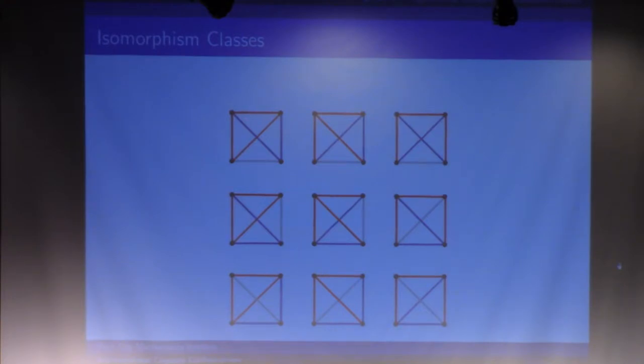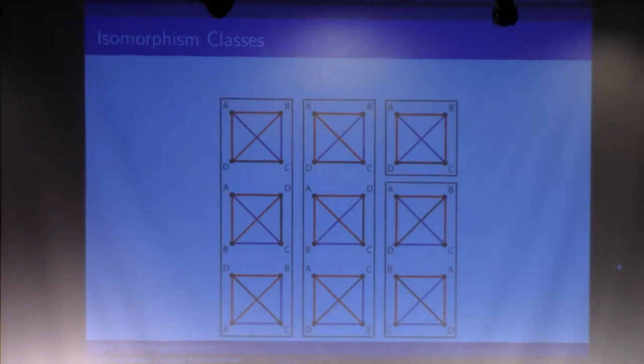But if you notice, if you look at the top one, if I were to rotate or reflect across this diagonal, I get this one right here. So there are some copies. What we do is find mappings between the graphs, and we show that there are actually four different isomorphism classes, so we don't need to check all nine.